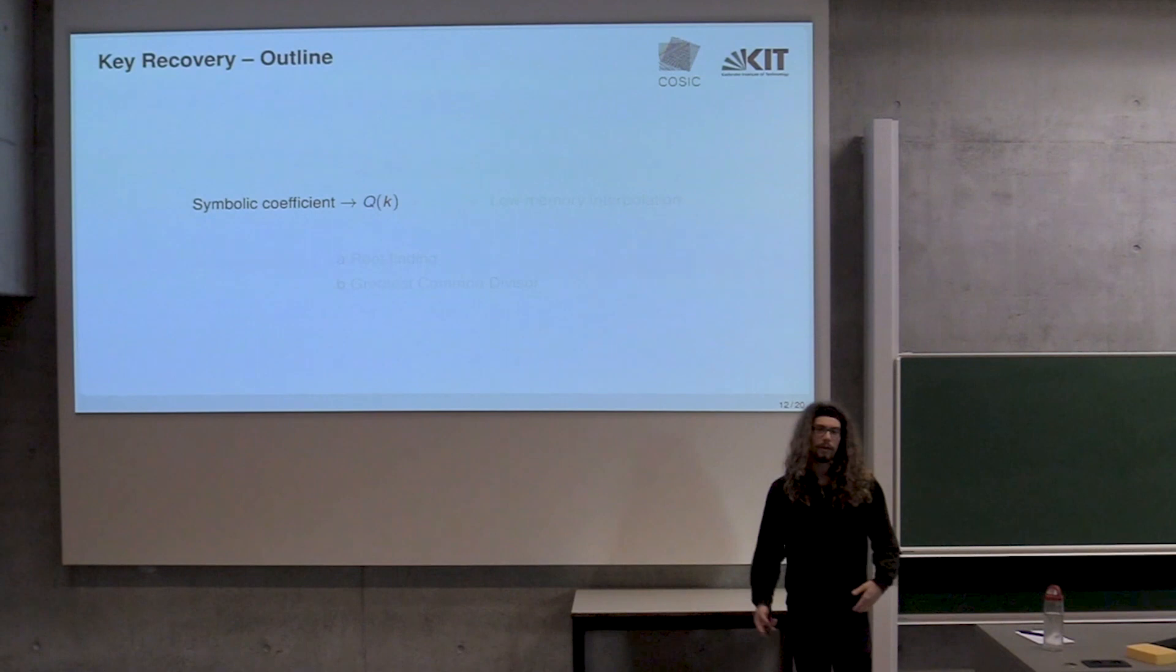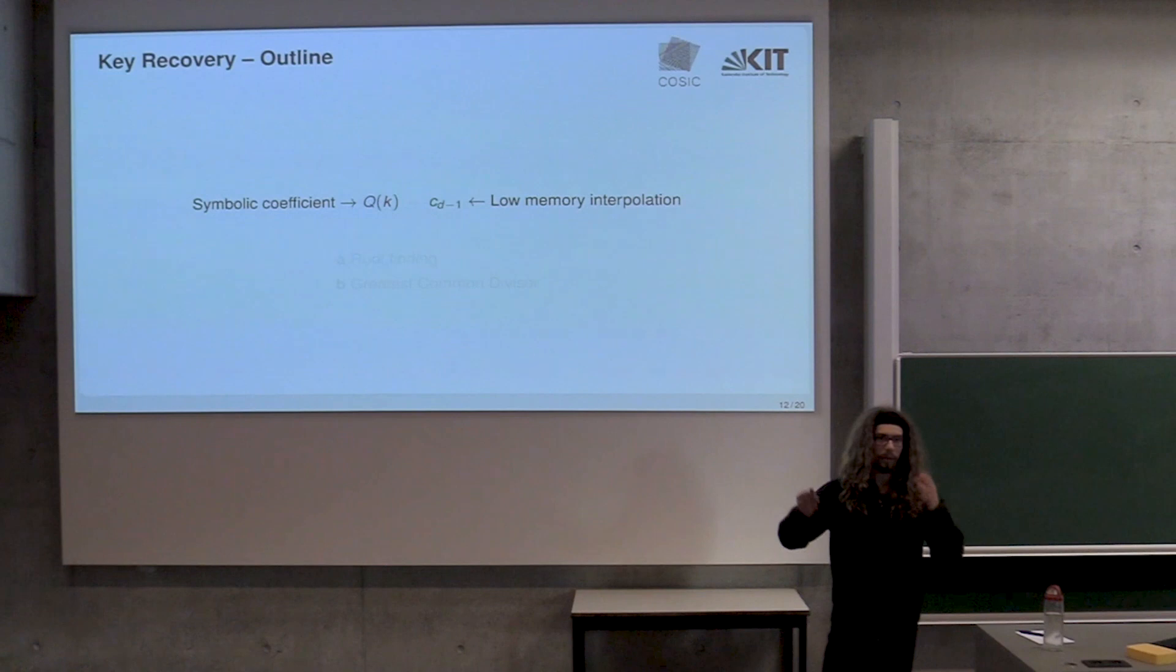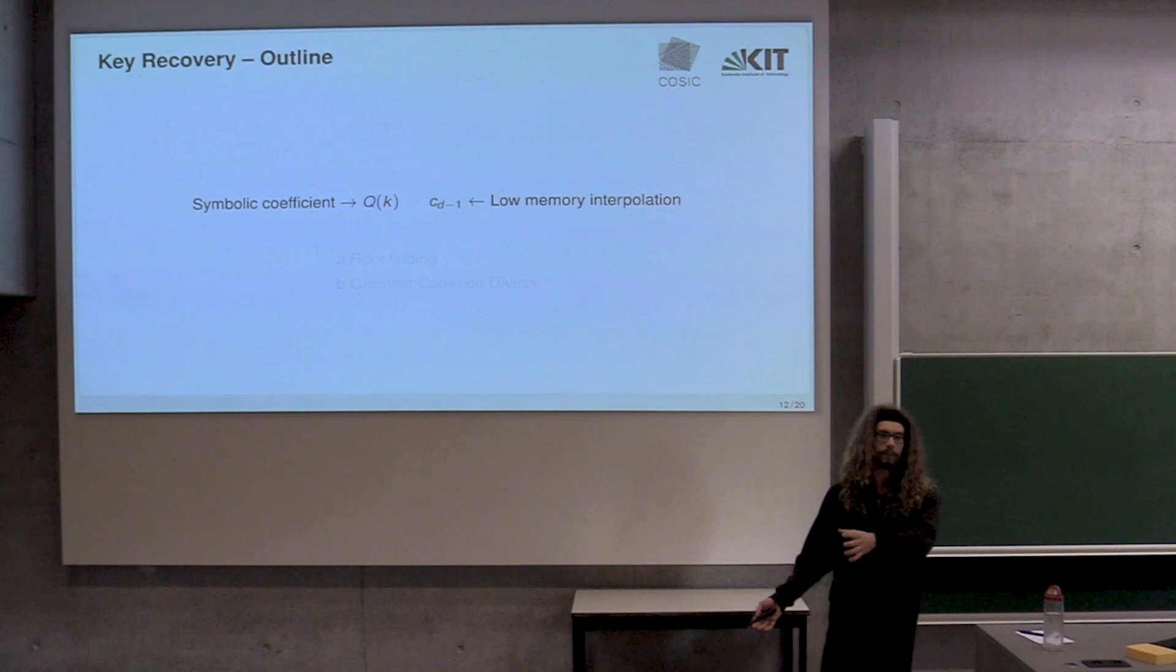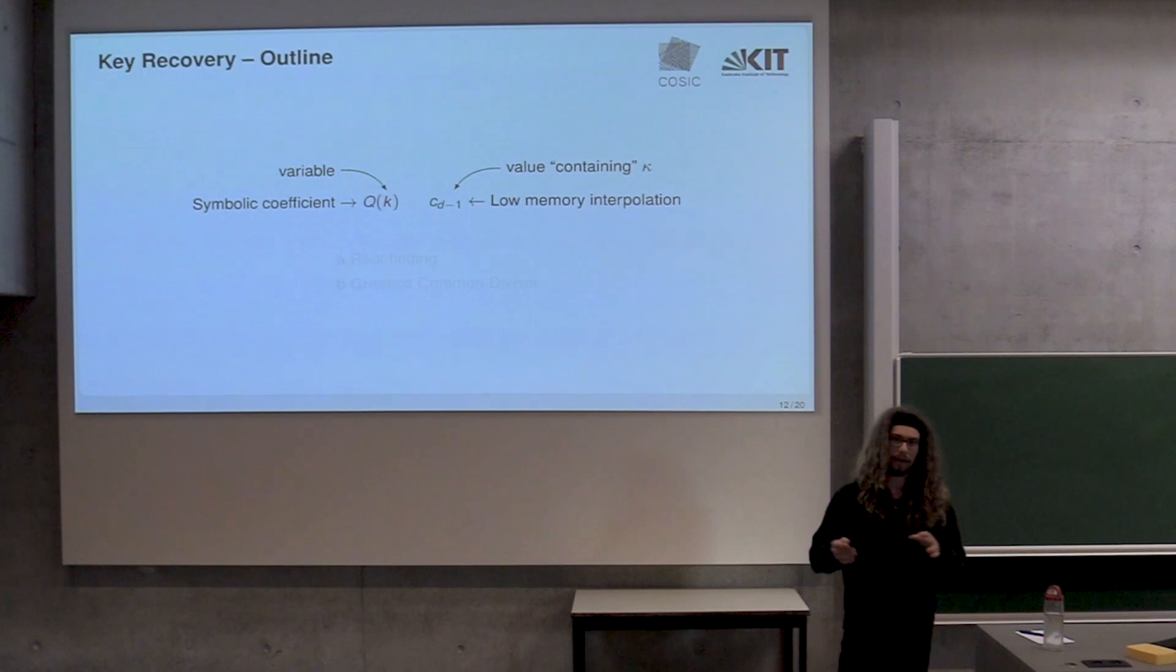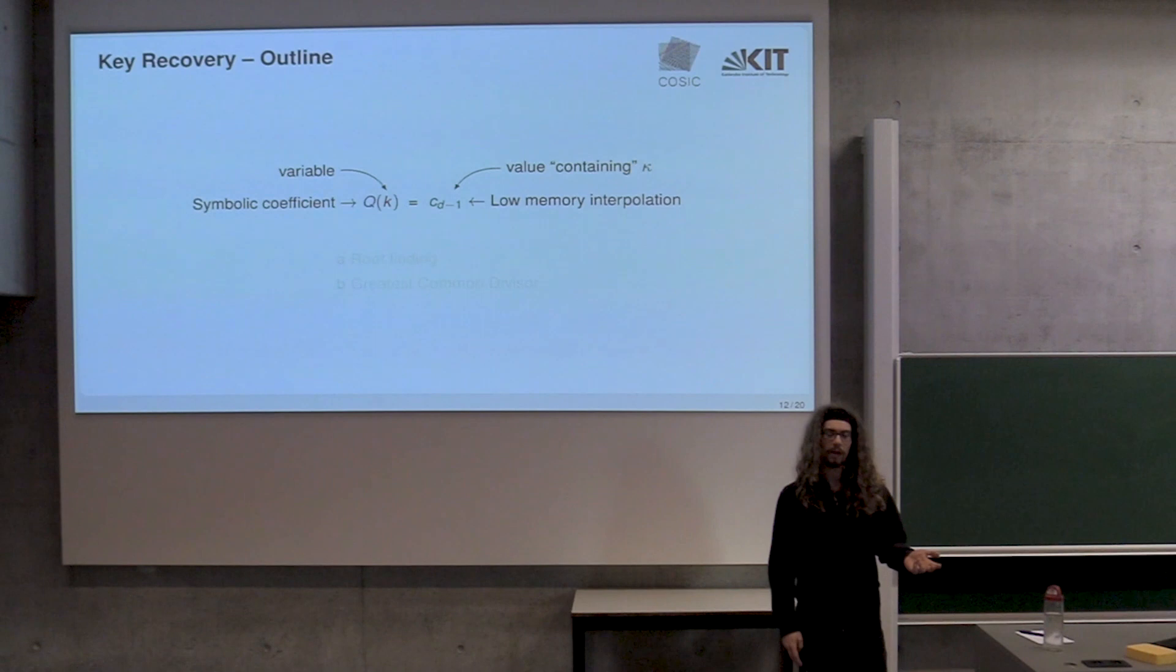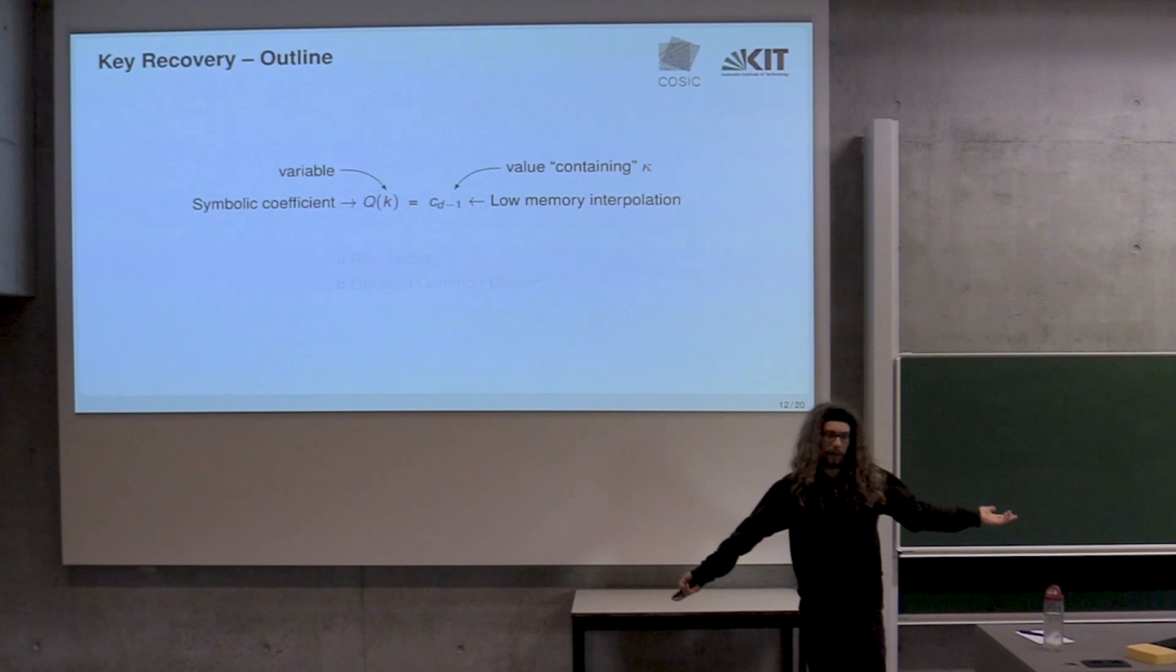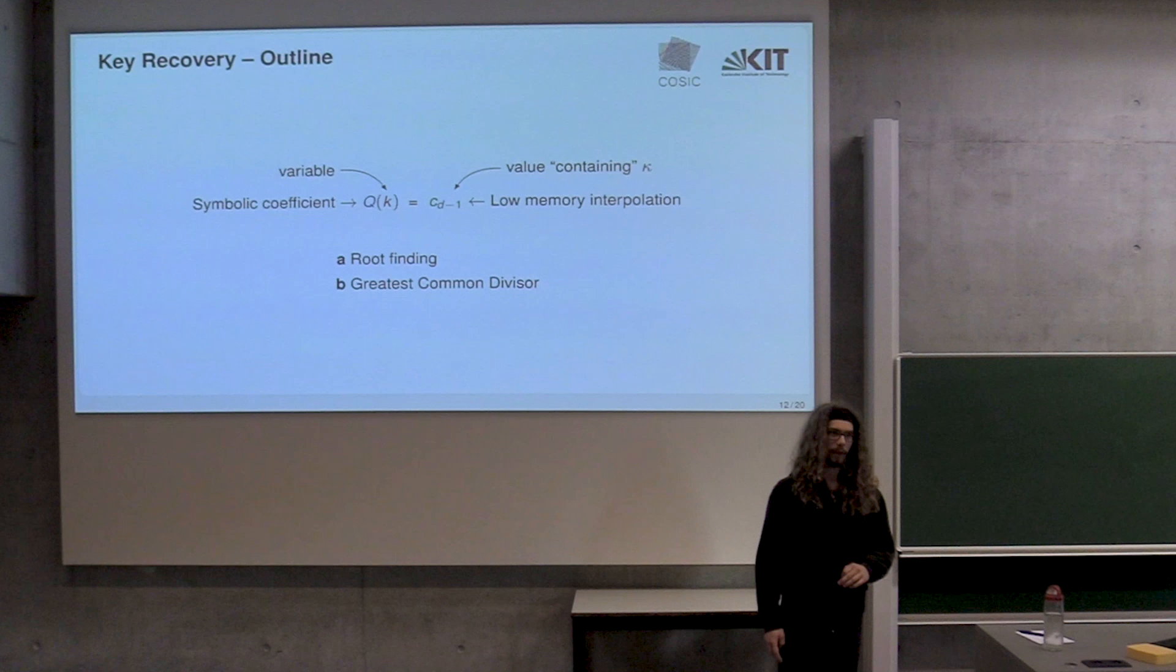When we write this out, we get X to some power, plus a polynomial in the key times X to the power minus one, plus some garbage that we're not interested in right now. If we look at this polynomial, what is this Q, this colorful Q up there? I'm not going to bore you with the details. We know what it is. Now this all comes together. We use this symbolic thing, this polynomial of the second highest coefficient. We apply the low memory interpolation to a cipher of which we do not know the key.